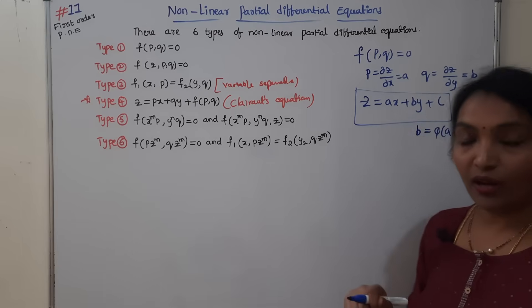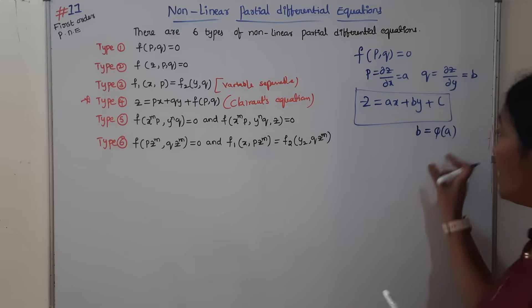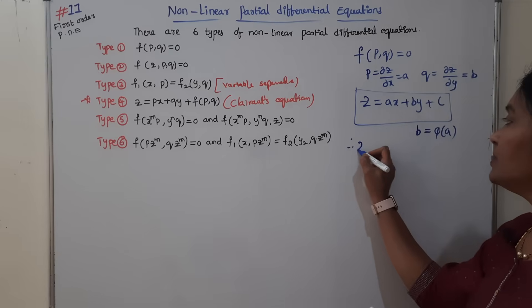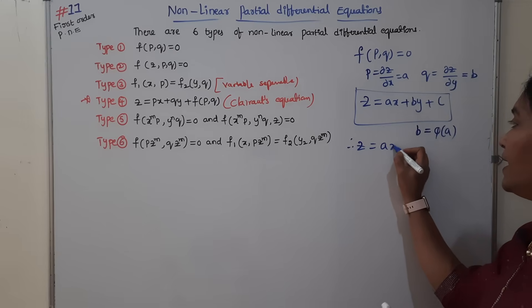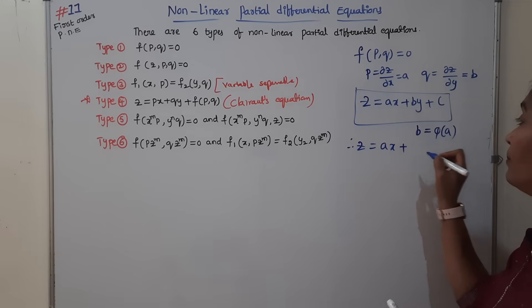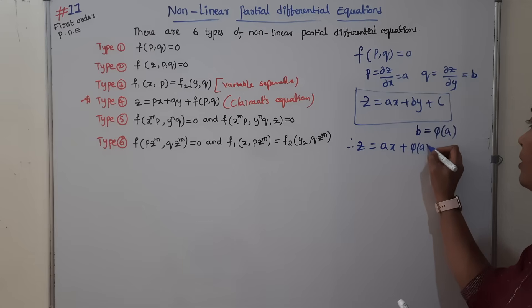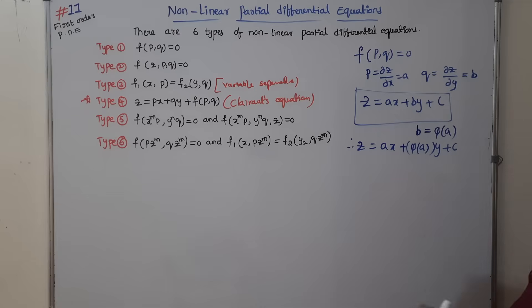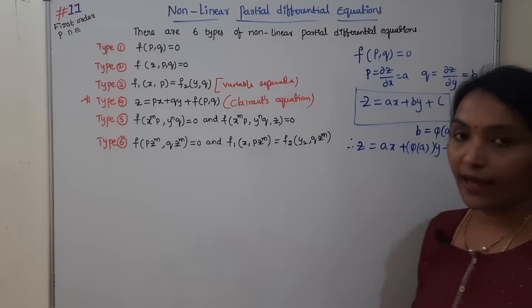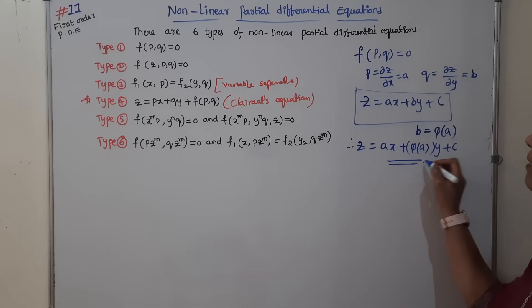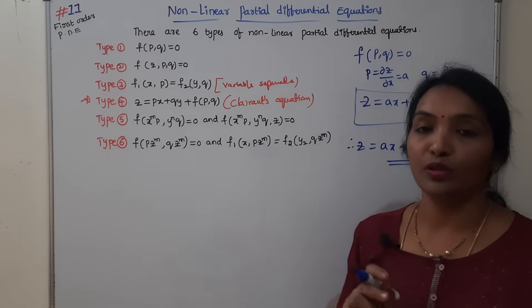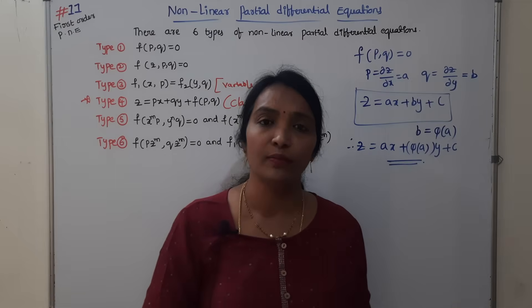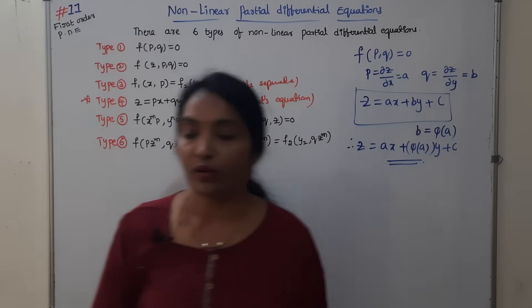If b = φ(a), substitute this value into the general solution. Therefore, the general solution is z = ax + φ(a)·y + c. This is the general solution — the problem is solved. Very simple, just note it down.